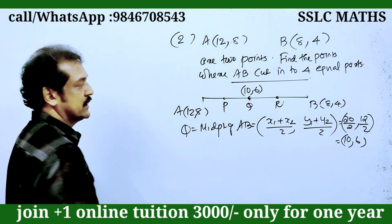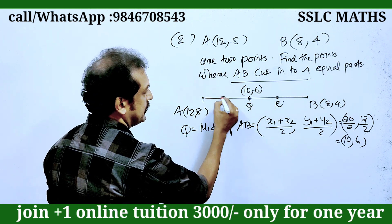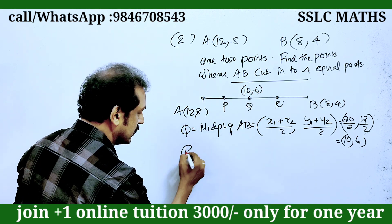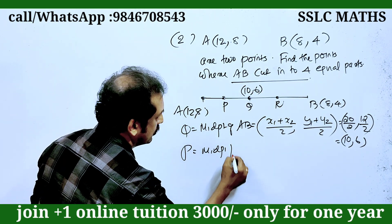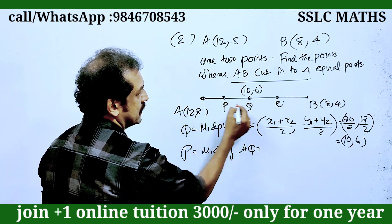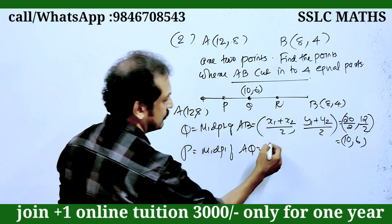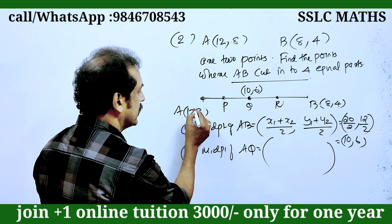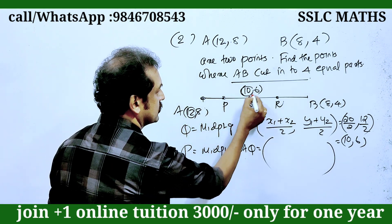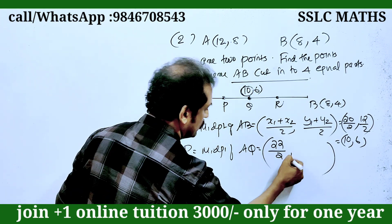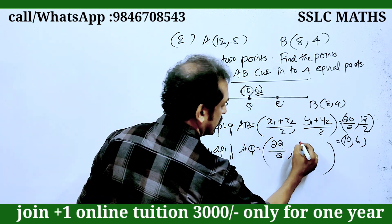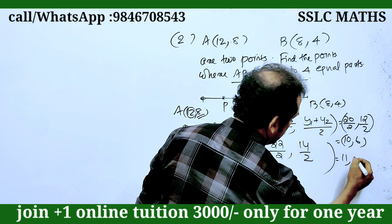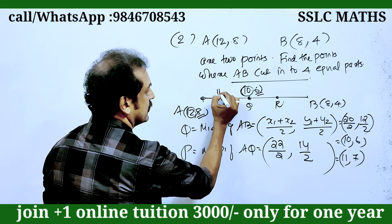The next one is P. P equals the midpoint of AQ. Using the midpoint formula: x1 plus x2 by 2, y1 plus y2 by 2. The x coordinate is 10 plus 10 giving 20 by 2. The y coordinate is 6, giving 14 by 2. The answer is 11, 7.